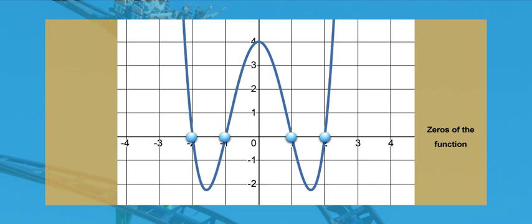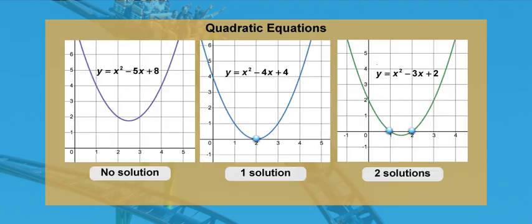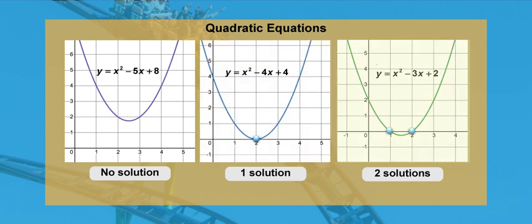Let's start our investigation of polynomial equations with quadratic equations, or polynomials of degree 2. When solving quadratic polynomials, recall that there are three possibilities. The first is that the parabola doesn't intersect the x-axis, meaning there is no solution. The second possibility is if the parabola intersects the x-axis at one point, meaning there is one solution. The third possibility is that the parabola intersects the x-axis at two points, for two solutions.